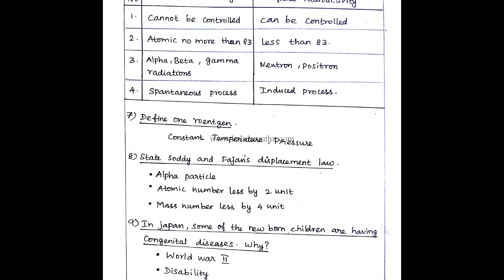State Soddy and Fajans displacement law. Alpha particles. Atomic number is less by 2 units. Mass number is less by 4 units.